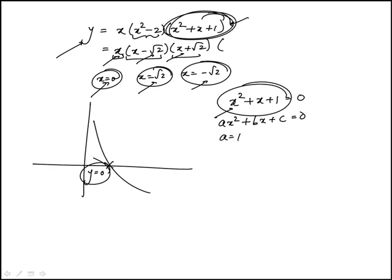I have a is 1, b is 1, c is 1. So we look at b squared minus 4ac, which is 1 squared minus 4 times 1 times 1, or 1 minus 4 is minus 3. So that's negative.